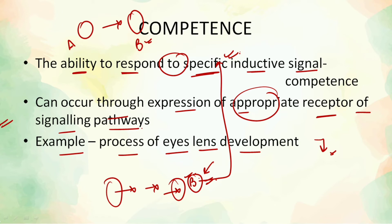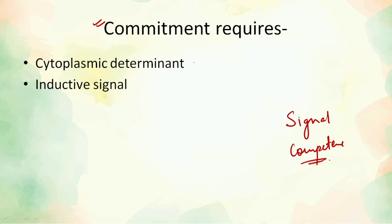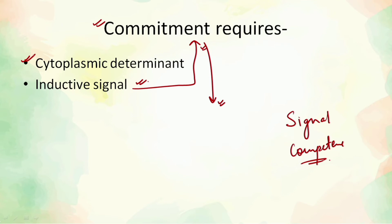Now, what is commitment? We have understood signal induction and competence. Commitment requires two things: the first is the cytoplasmic determinant and the second is the inductive signal. We have just discussed inductive signals, so now we'll discuss cytoplasmic determinants. I have included this topic here because it can now be correlated with the concept of competence.